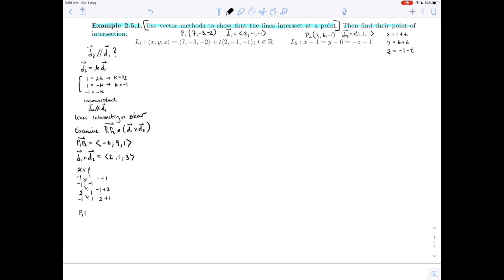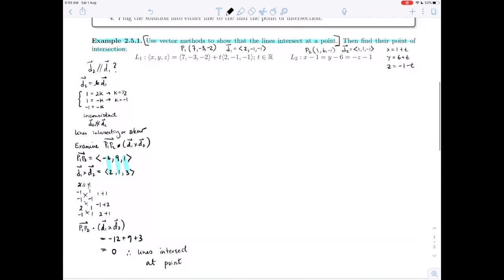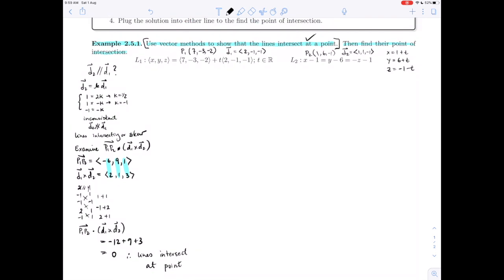So then the triple scalar product P₁P₂ dotted with d₁ cross d₂ is: we multiply the components and add them up. We have -12 + 27 + 3, which gives us 0. So the vectors are coplanar. If the vectors are coplanar, the lines are coplanar, and that means that they are intersecting. So our lines do indeed intersect at a point. That is the first thing we were asked to show. We have done the first part of example 2.5.1, the review procedure that we'd seen before. Now we are going to go on to find the point of intersection.